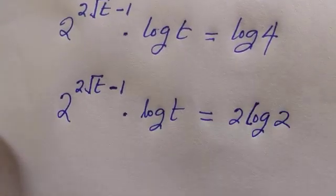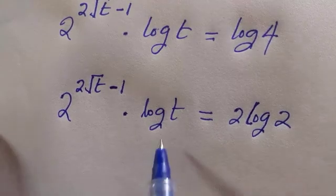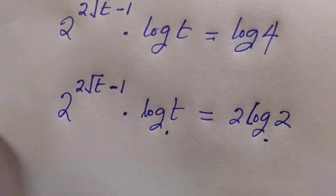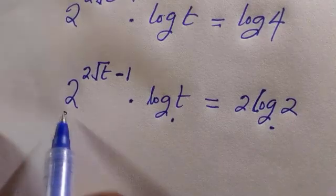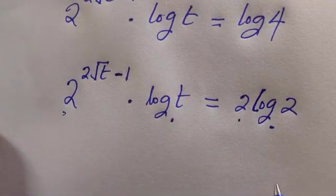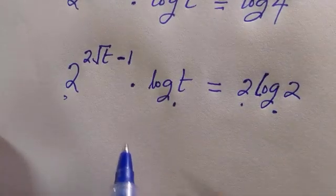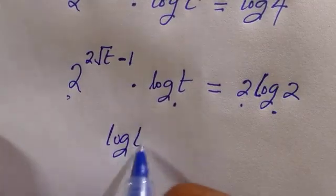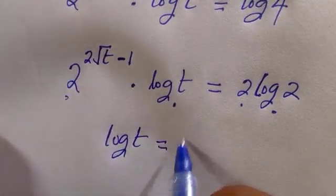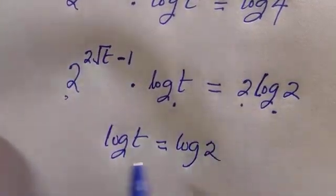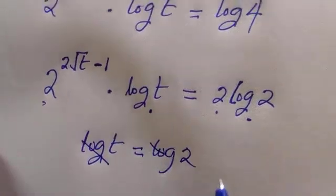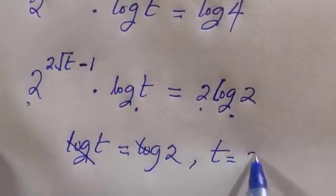So what I will do next is when I try to compare these two, if I let log t to be log 2 and the second one to be 2, then we are going to have log t equals log 2. Log cancels log, we have t equals 2.